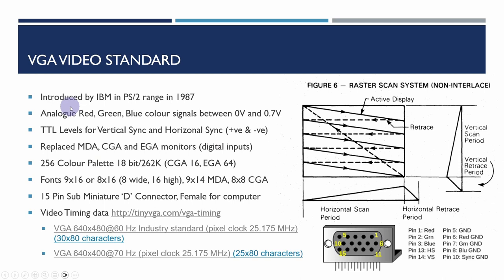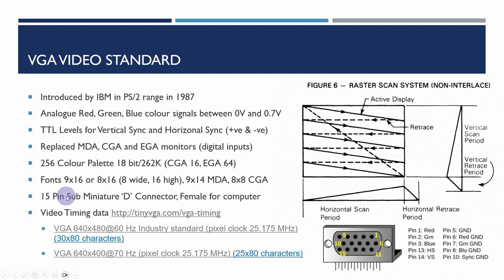The VGA video standard was introduced in 1987 with the PS/2 range. At the time of the monochrome display adapter and original IBM PC and PCXT, monitors only had TTL digital levels, whereas VGA uses an analog level between 0 and 0.7 volts, enabling continuously variable colors. MDA, CGA, and EGA only had digital levels, restricting the number of colors. We'll use 8-wide by 16-high characters, a 15-pin sub-miniature D VGA connector, and 640×400 at 70 Hz using a 25 MHz dot clock.